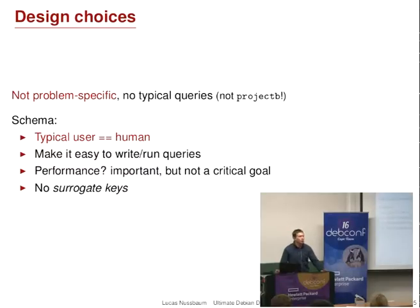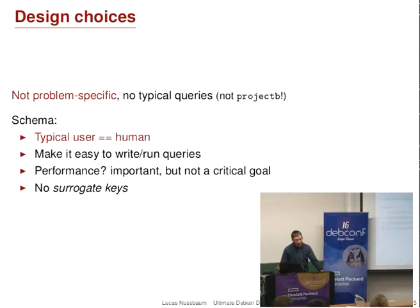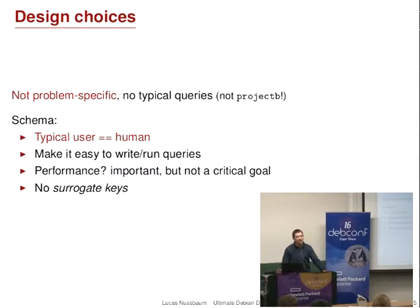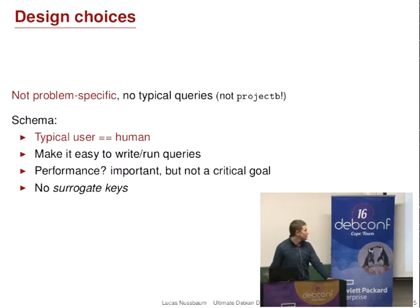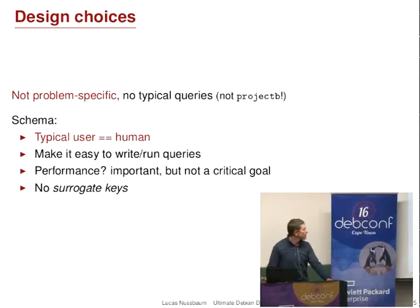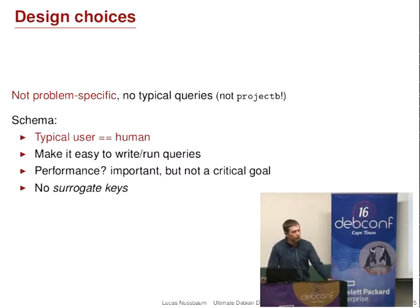The goal was to do something that was not problem-specific, so not optimized for typical queries, but rather make it easy to ask about basically anything. The typical user is a human, because it is expected that the most time will be spent thinking about the queries. Performance is important and we try to optimize for it, but it's clearly not the first goal. When you have to choose between ease of use and performance, we usually choose ease of use.